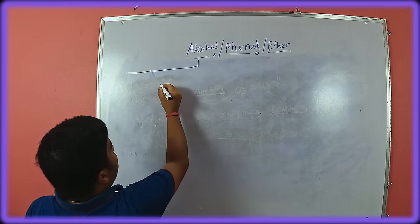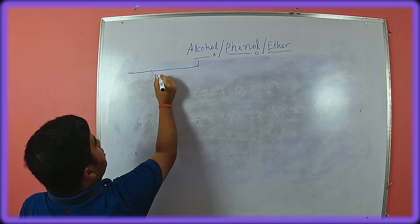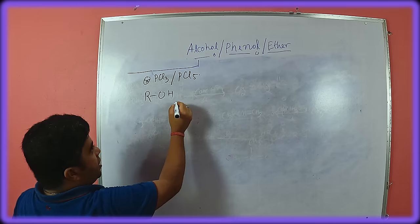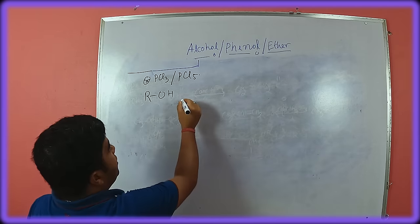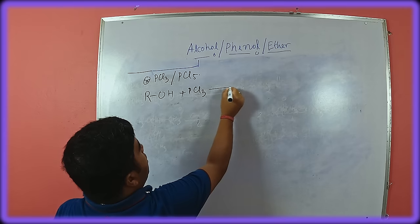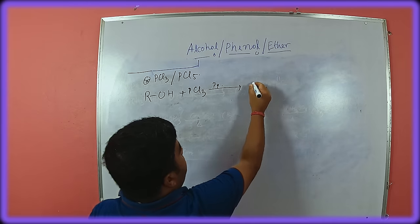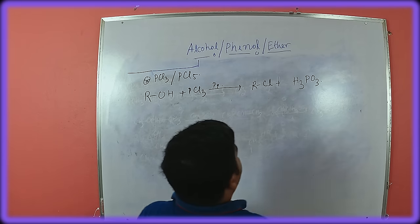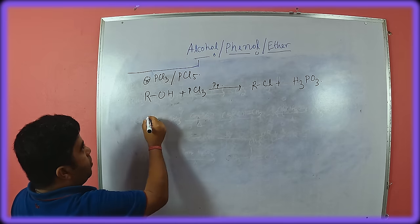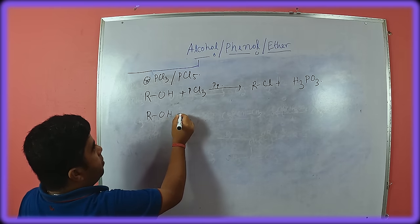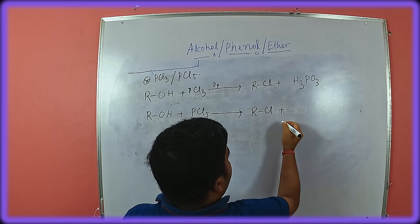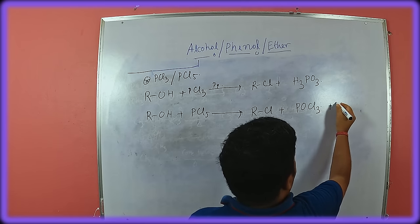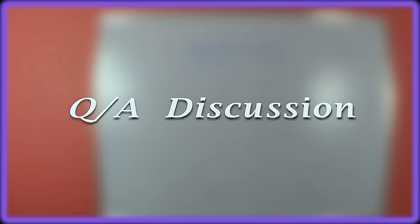Next is reaction with phosphorus halide. R-OH reacted with PCl3 gives R-Cl plus H3PO3. When R-OH reacts with PCl5, it gives R-Cl plus POCl3 and HCl. The HCl produced is consumed by pyridine. These are all reactions of alcohol.